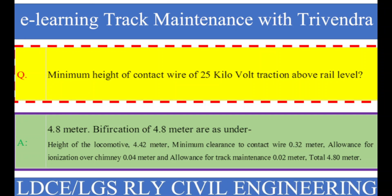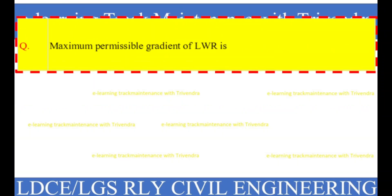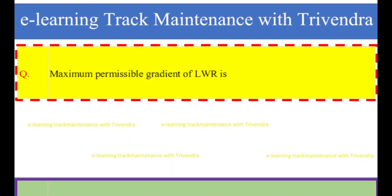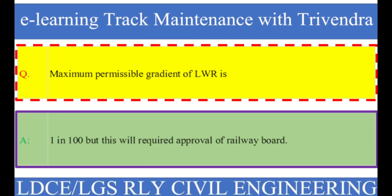Question number 55: Maximum permissible gradient of LWR is? The right answer is 1 in 100, but this will require approval of the Railway Board.